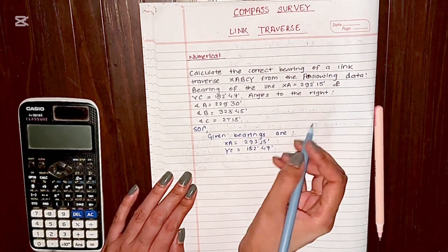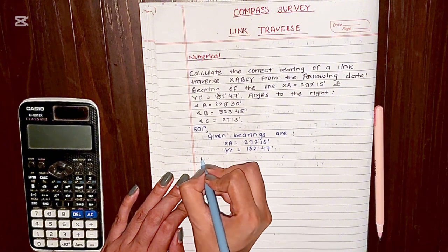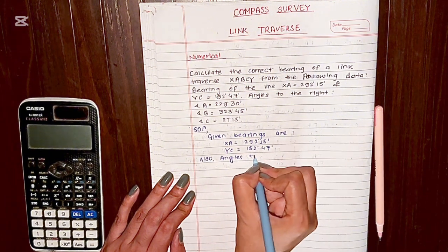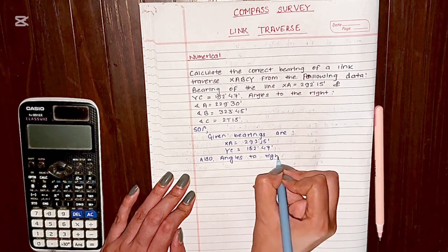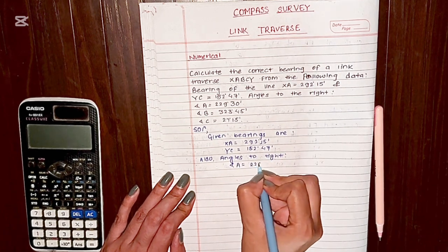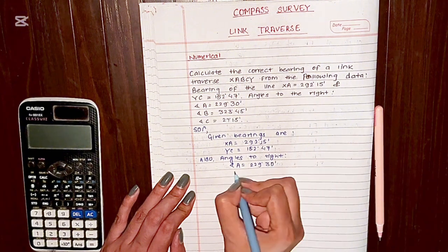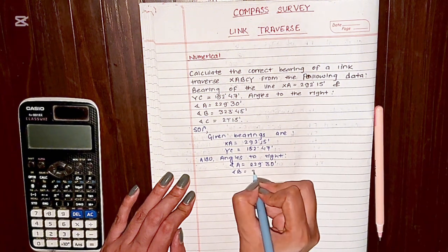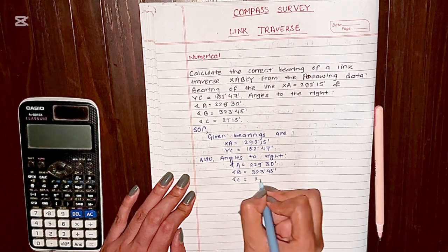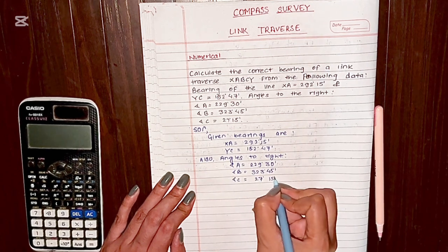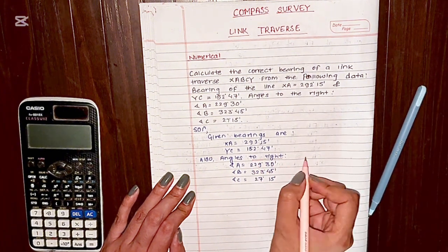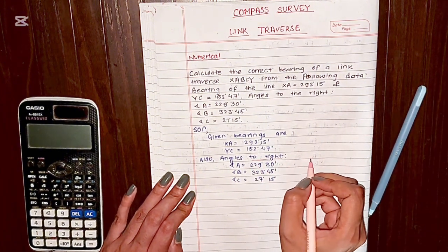The angles to the right are also given: angle A is equal to 229 degrees 30 minutes, angle B is equal to 323 degrees 45 minutes, and angle C is equal to 27 degrees 15 minutes. Since these are angles to the right, this means clockwise direction from the preceding line to the forward line.